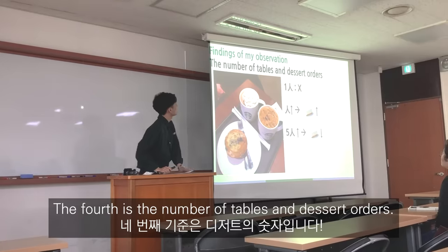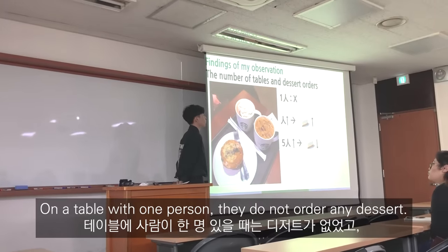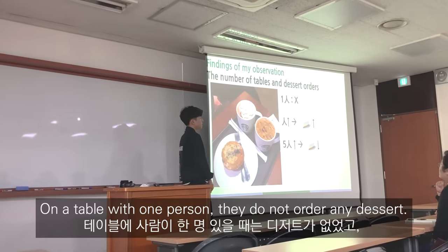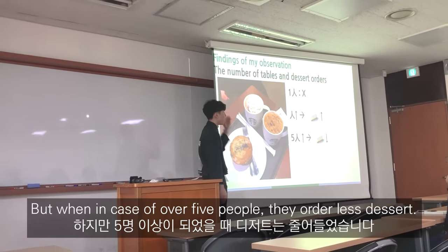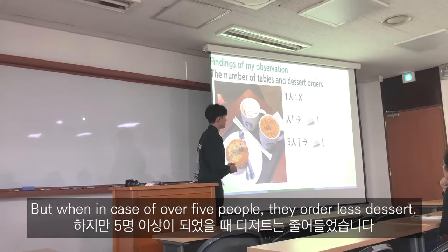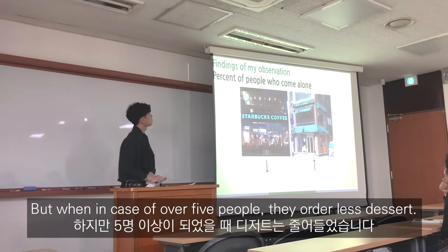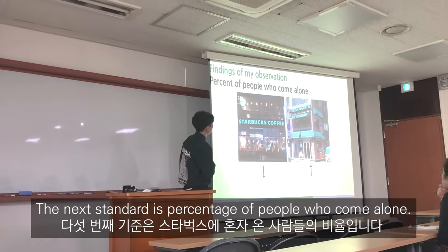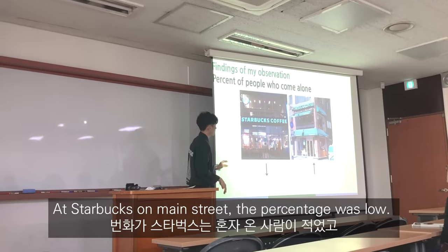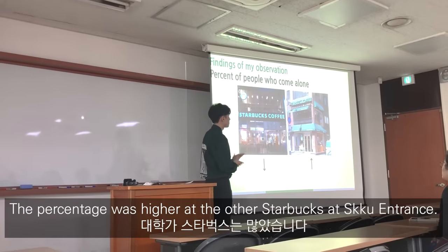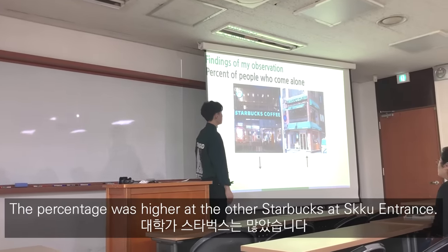The fourth standard is the number of people at a table and dessert orders. If one person is at the table, they do not order desserts. The more people at a table, the more desserts are ordered — but if it's over five people, dessert orders actually decrease. The fifth standard is the percentage of people who come alone: it's very low at the Main Street Starbucks and much higher at the Sungkyunkwan University Starbucks.